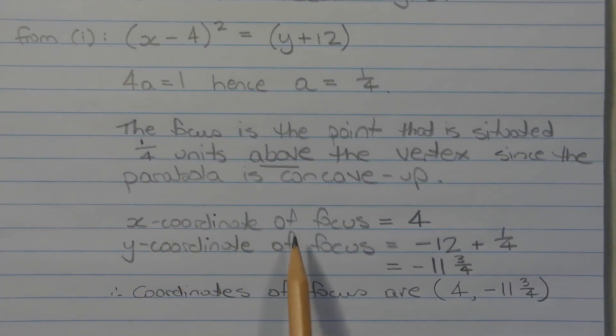Now, the x-coordinate of the focus is equal to the x-coordinate of the vertex, which equals 4. And the y-coordinate of the focus is equal to negative 12 plus 1 over 4. So it's 1 over 4 units above the vertex, which equals negative 11 and 3 over 4. Therefore, the coordinates of the focus are 4, negative 11 and 3 over 4.